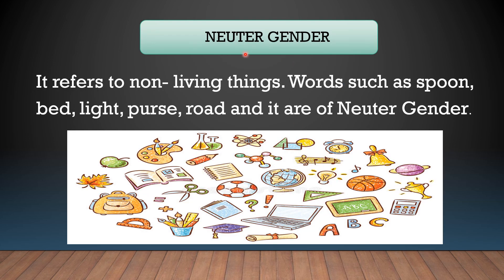The third type is neuter gender. It refers to non-living things. Words such as spoon, bed, light, purse, road — all these words are of neuter gender, and especially the pronoun 'it' is used only for things. You can see the picture here — it is a group of non-living things: spoon, bed, light, purse, road. They are a group of non-living things, so it is neuter gender.